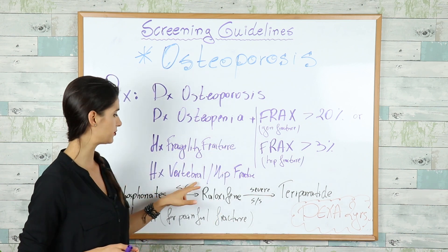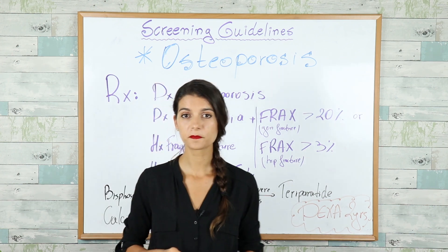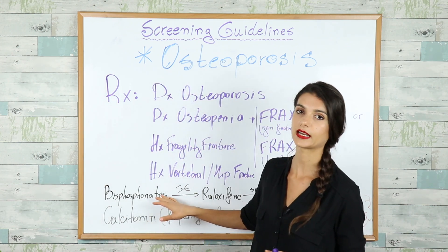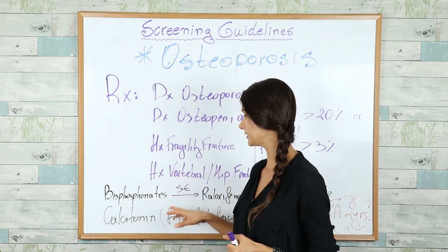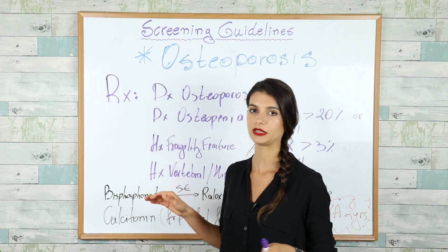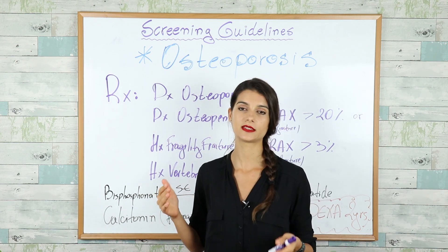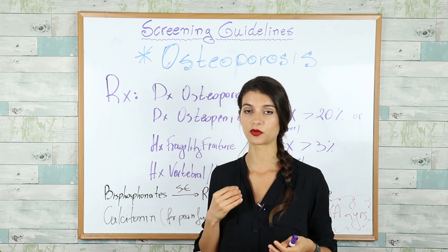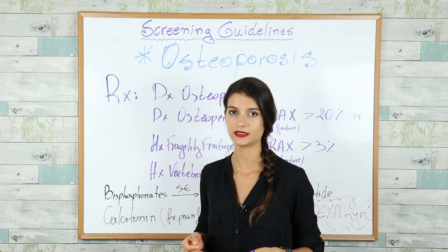Patients with a history of vertebral or hip fracture are also treated. The preferred drugs are bisphosphonates, like alendronate and zoledronic acid. A common side effect of bisphosphonates is GI symptoms — that is why patients are always advised to sit upright for at least one hour after taking an oral pill, because bisphosphonates can cause erosive esophagitis.